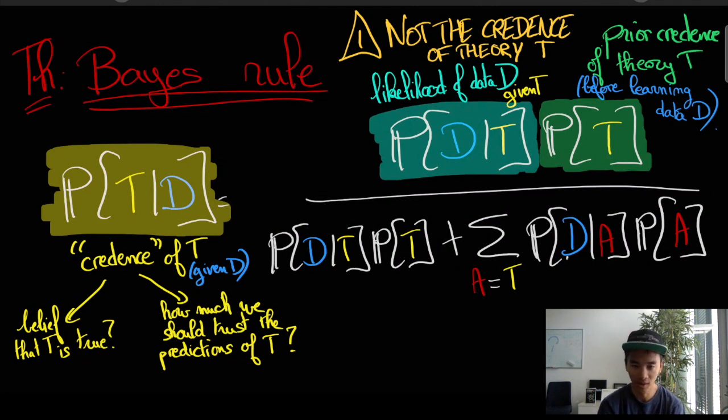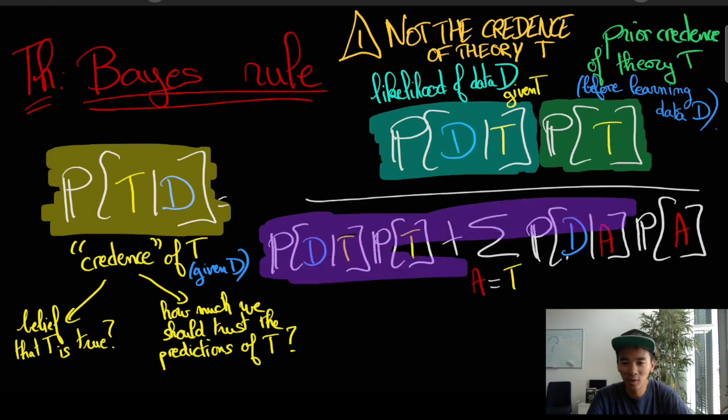We should nevertheless have credences in different theories. This is something that disturbs a lot of people and it's the reason why Bayesianism has been rejected by a lot of scientists and philosophers for a long long time until basically the 60s or 70s.